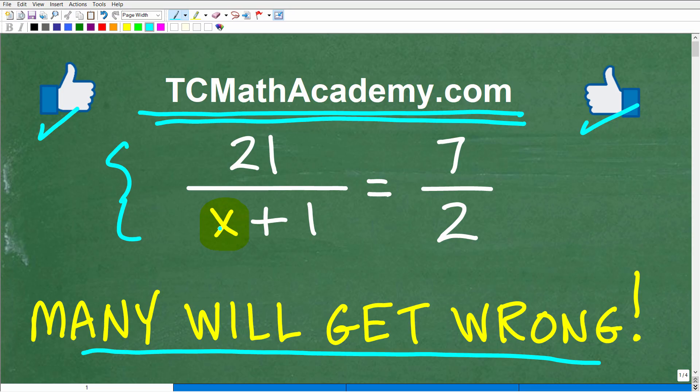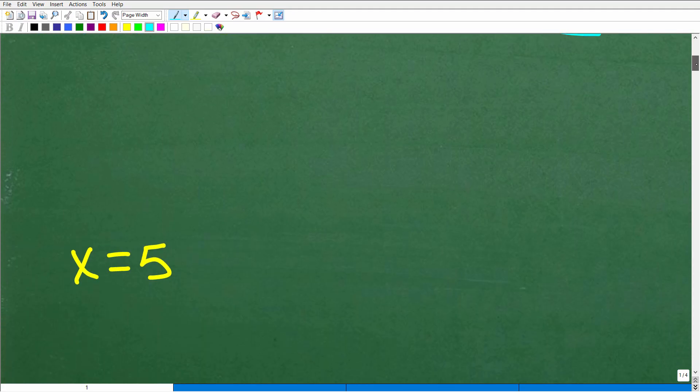Okay, so we have 21 over x plus 1 is equal to 7 over 2. Again, the objective here is to solve for x. So what is x equal to? Well, let's go ahead and take a look at the answer right now, and you can see it plain as day. There it is. x is equal to 5.